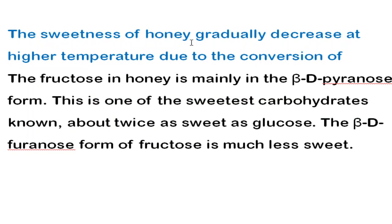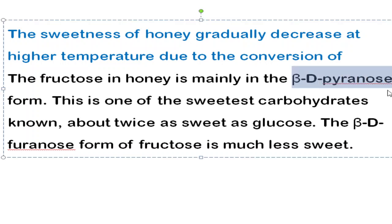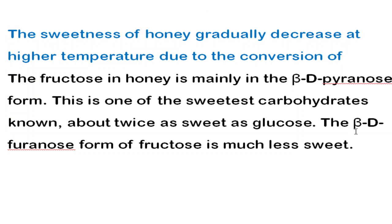The next question: the sweetness of honey gradually decreases at higher temperatures due to the conversion of the beta-D-pyranose form of fructose to the beta-D-furanose form. The beta-D-pyranose form is the sweetest form of fructose. When it is converted into the beta-D-furanose form — that is, the pyran ring converted into the furan ring — the sweetness decreases.